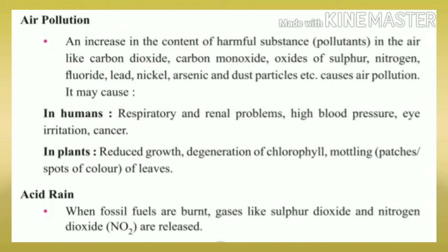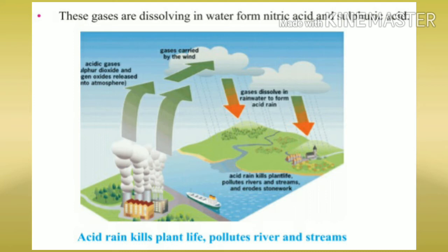Acid rain also forms due to air pollution. When fossil fuels are burnt, gases like sulfur dioxide (SO₂) and nitrogen dioxide (NO₂) are released. When these oxides of sulfur and nitrogen are released into the atmosphere, they mix with rainwater during rain formation. Sulfur dioxide forms sulfuric acid, and nitrogen oxide reacts with rainwater to form nitric acid — this is called acid rain.